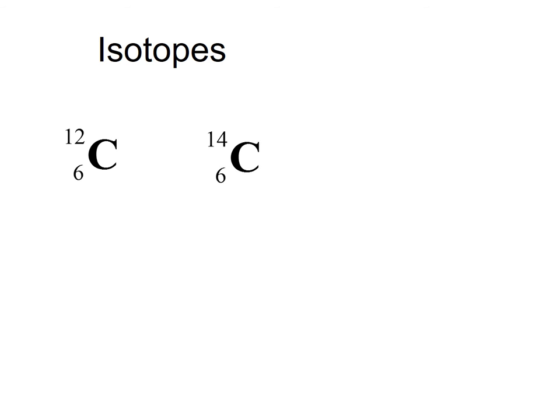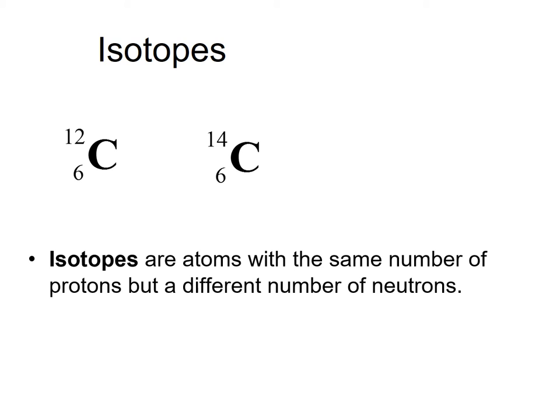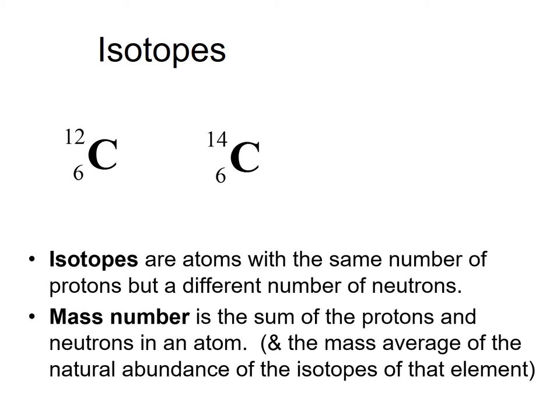So we're talking about carbon. There's more than one type of carbon. There's carbon-12, there's carbon-14, and these two are different isotopes of the same element carbon. Isotopes are atoms with the same number of protons, but a different number of neutrons.